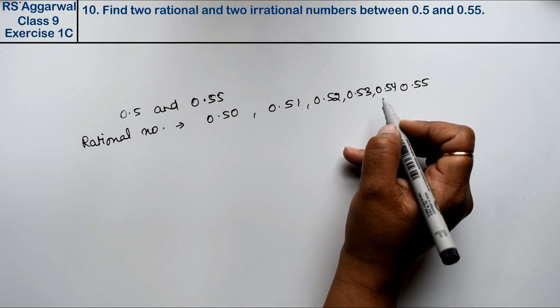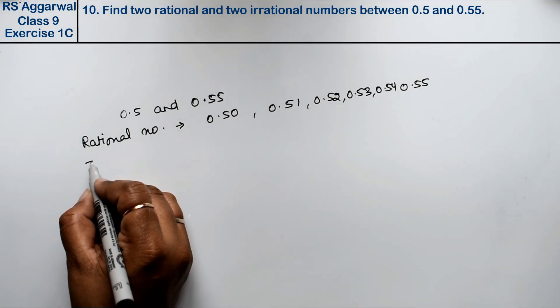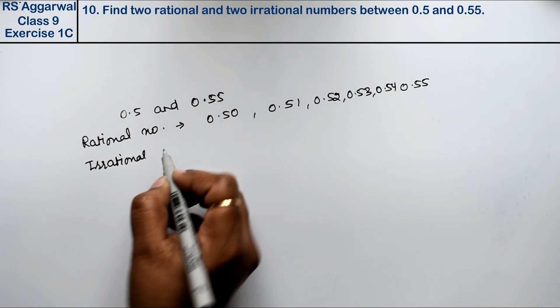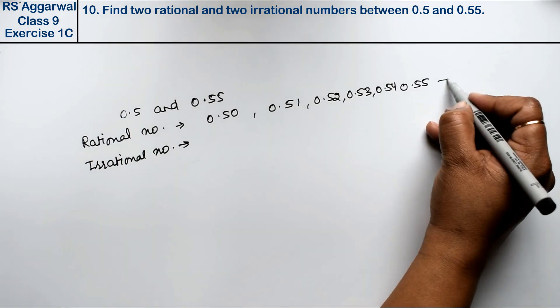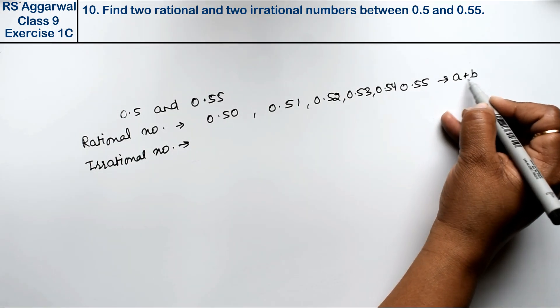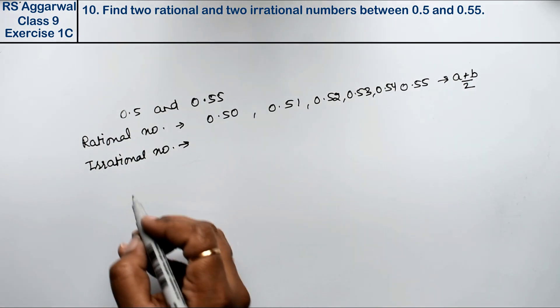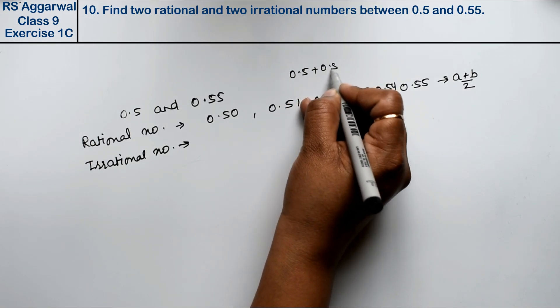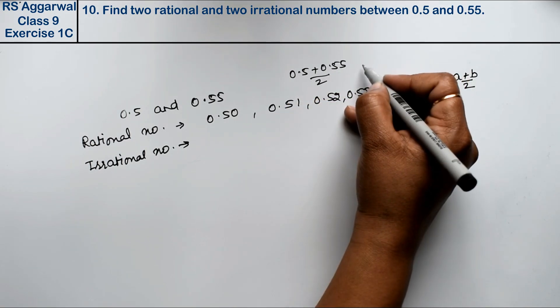It could be 0.54, right friends. Now let's look at irrational numbers. For rational numbers, you can also use this formula: a plus b upon 2. Let's see: 0.5 plus 0.55 upon 2. What does this give us?